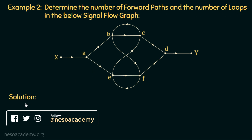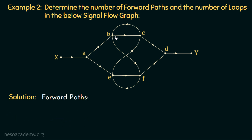Moving on to the solution, firstly we will discuss the forward paths. We know that a forward path is the path from the input node to the output node. So we need to find out the number of ways by which we can move from the input node to the output node. Starting from input node X, we move to node A, then to node B, then to node C, then to node D, and finally to the output node.